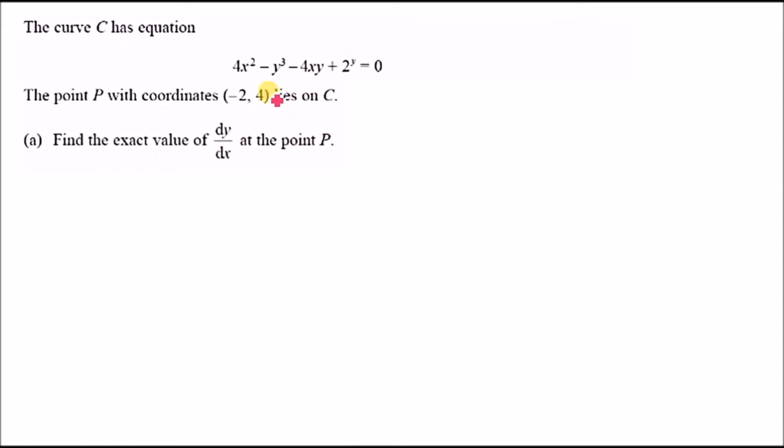The first term, 4x², differentiates to 8x. For y³, it's quite easy - you just drop the power like you do with the x term, so it'd be 3y². Because it's y, you automatically have to multiply by dy/dx to indicate that it's been differentiated with respect to itself.